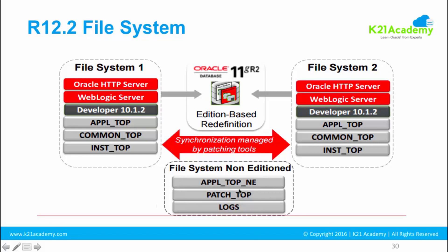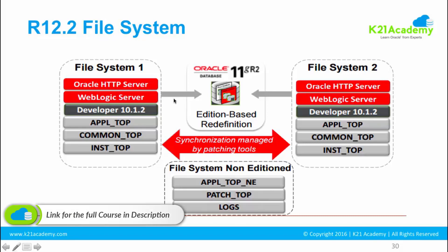At the bottom you have some files which are not required to be editioned. What 'editioned' means we will cover when we look at online patching. This is how the application tier file system looks like. What APPL_TOP, COMMON_TOP, and INST_TOP are — we are going to look at that when we cover the file system in detail in its dedicated module.